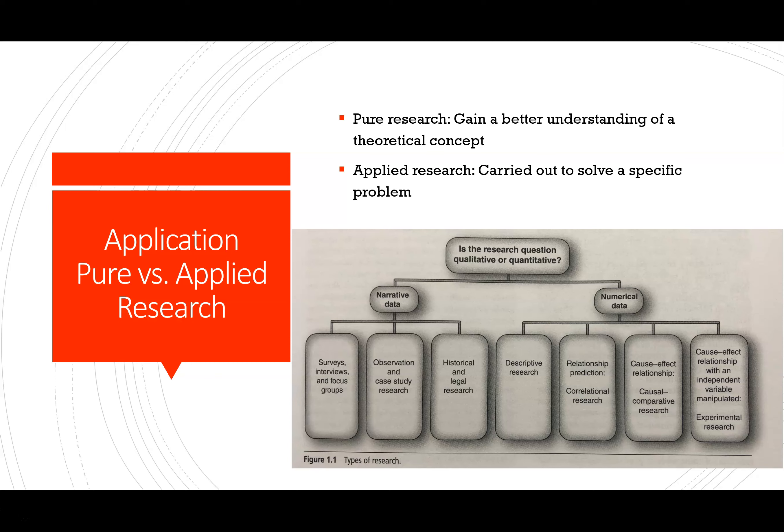On the left side of this chart, we're looking at the qualitative side — narrative data — which includes interviews, observations in the field, and historical research. On the right side is quantitative research, working with numbers. That includes describing a phenomenon, finding or predicting a relationship, examining cause and effect, and experimental research.